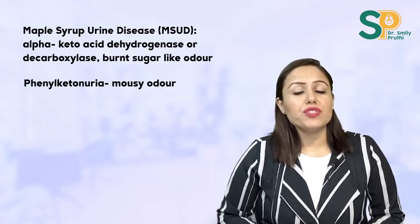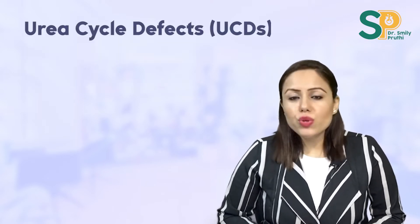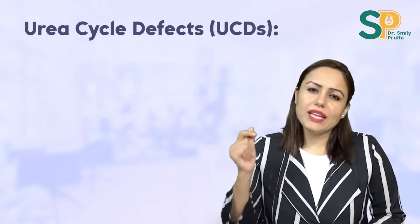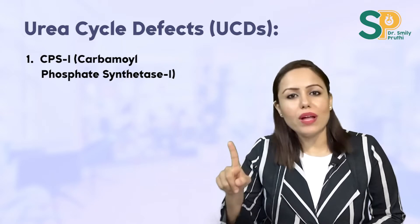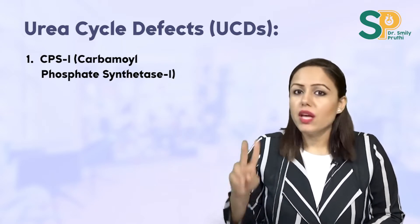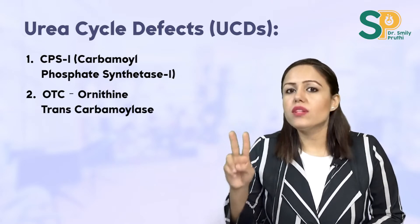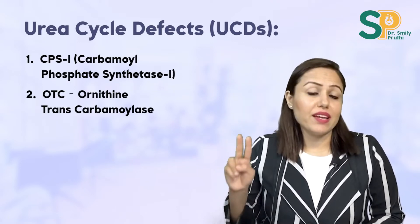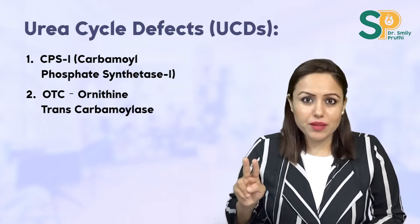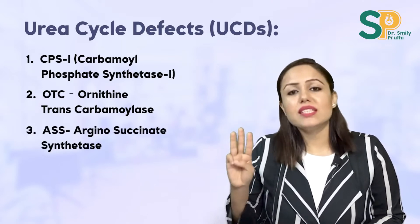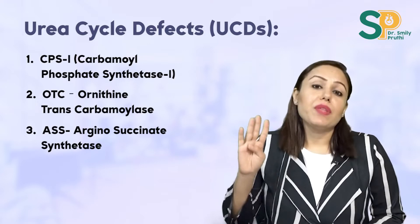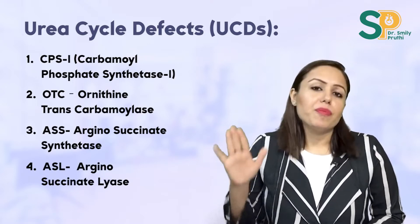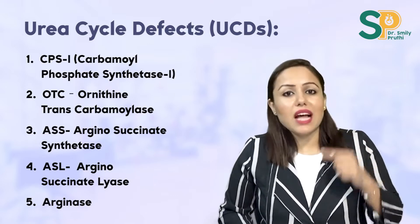Do all urea cycle enzyme defects. The five enzymes: number one — carbamoyl phosphate synthetase 1 (CPS1), the rate-limiting enzyme; number two — OTC (ornithine transcarbamoylase), the most common urea cycle defect, absent in brain; number three — argininosuccinate synthetase, which converts ATP to AMP — a very important step; number four — argininosuccinate lyase; number five — arginase, the last enzyme, absent in kidneys.